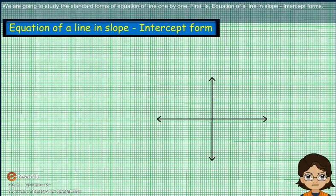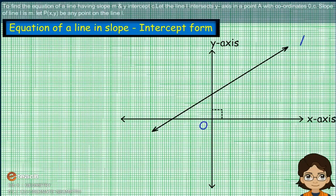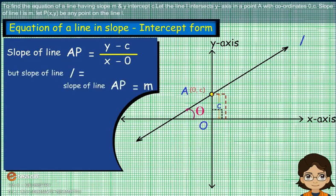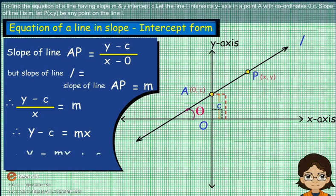We are going to study the standard forms of equation of a line one by one. First is the equation of line in slope-intercept form. To find the equation of a line having slope m and y-intercept c, let the line L intersect the y-axis at point A with coordinates (0, c). The slope of line L is m. Let P(x, y) be any point on the line L.